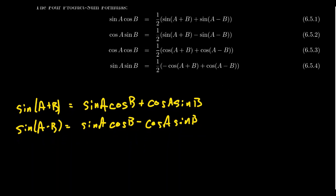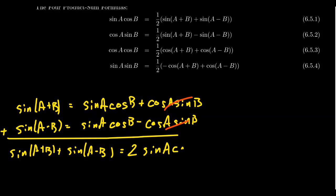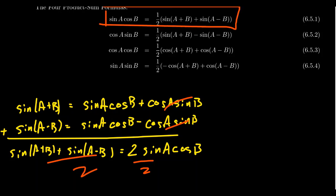So now we have two equations. We're going to add them together. On the left-hand side you get sine of (A+B) plus sine of (A−B). On the right-hand side, the cosine A sine B terms cancel out, and you double up to get 2 times sine of A cosine of B. Dividing both sides by two gives exactly this identity: sine of A times cosine of B equals one-half times [sine of (A+B) plus sine of (A−B)].